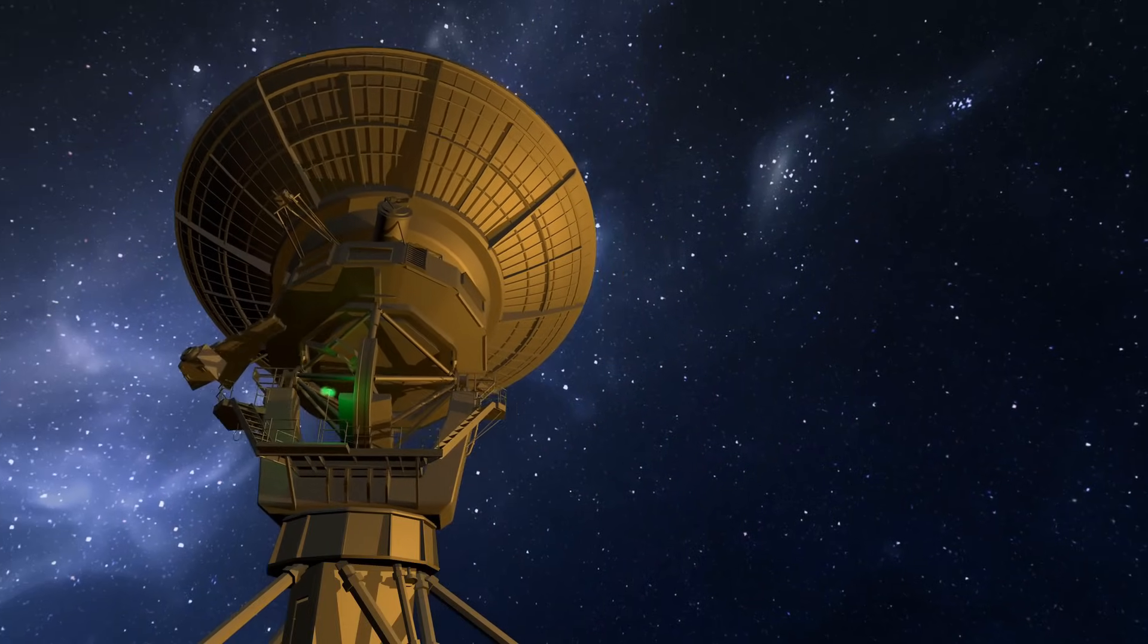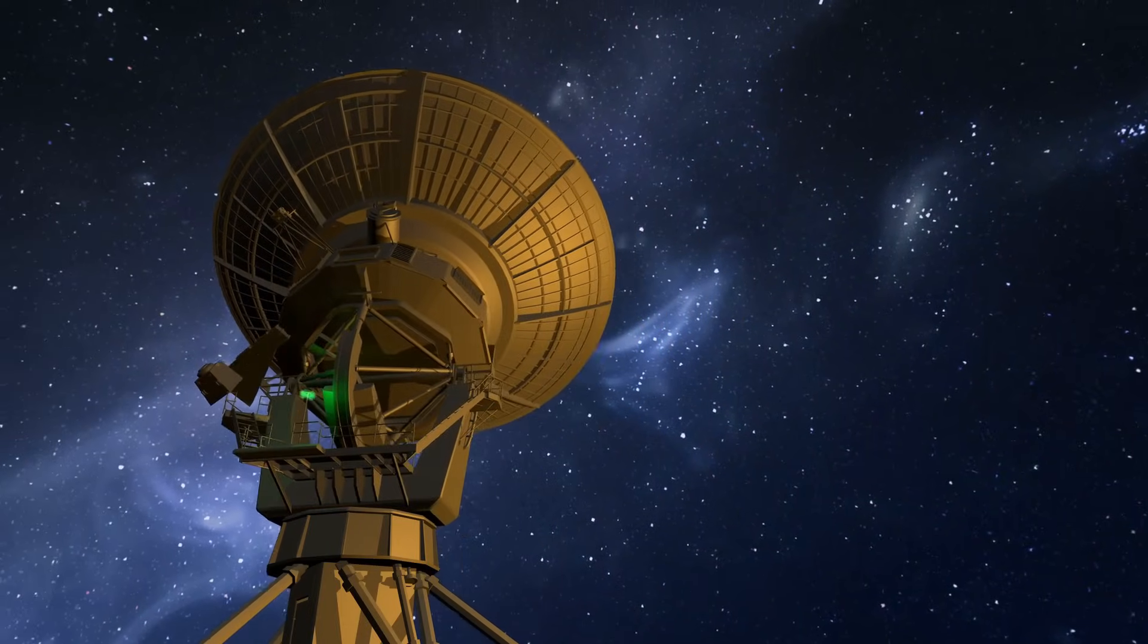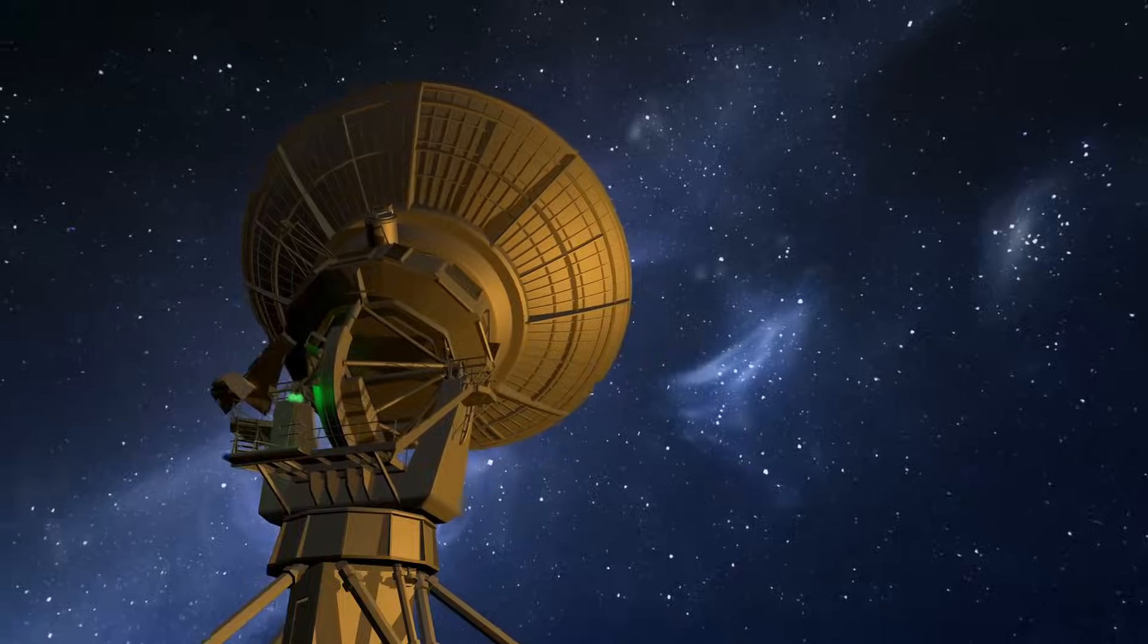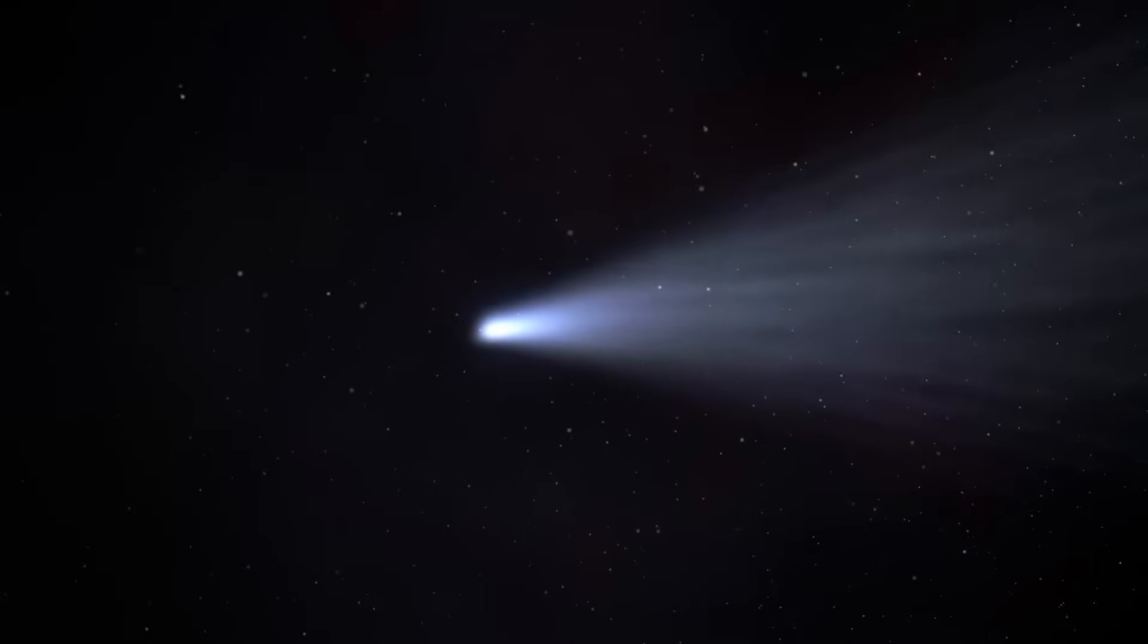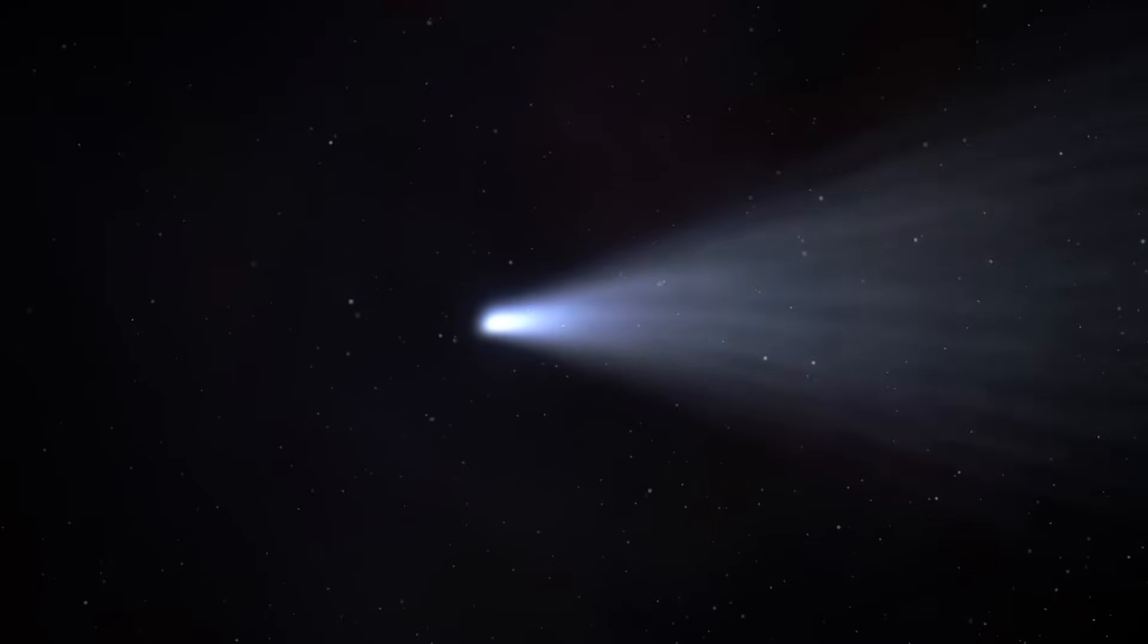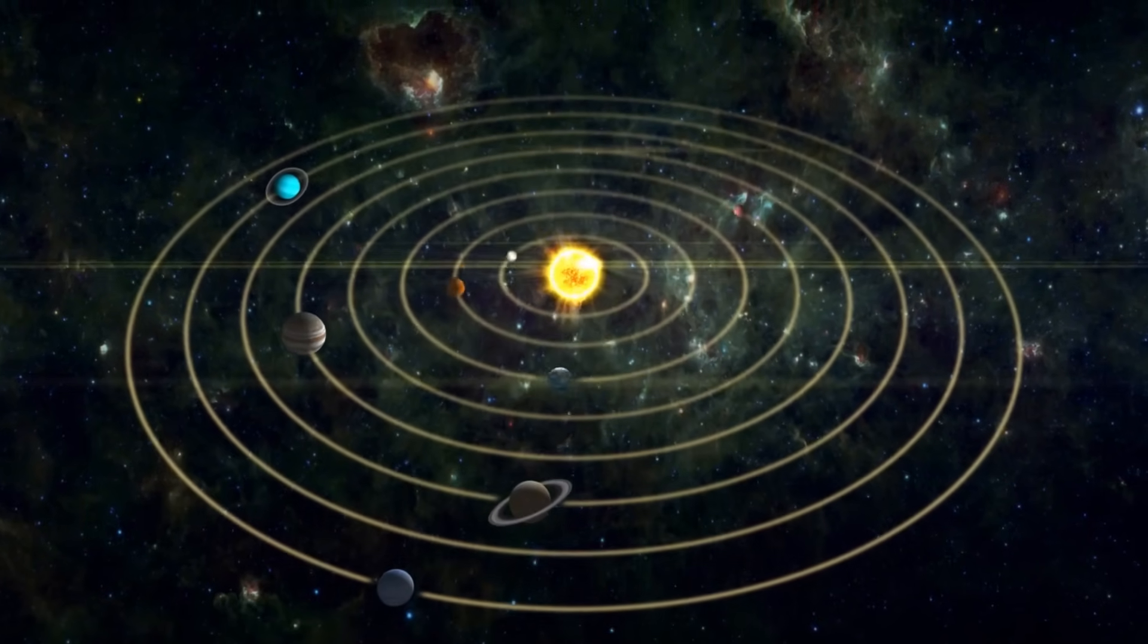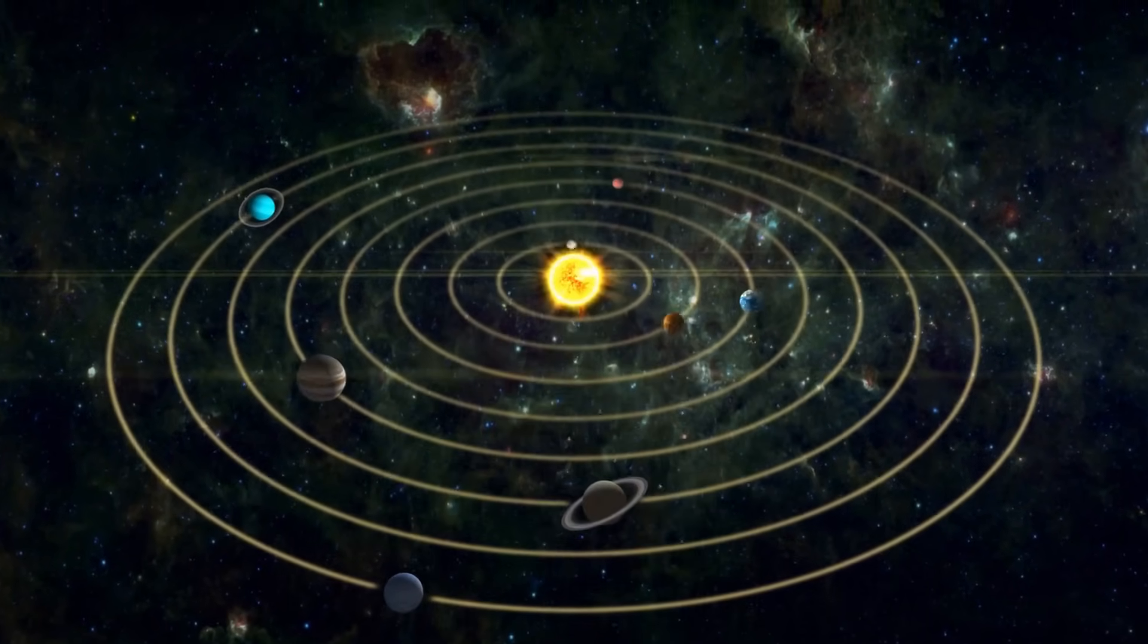The images themselves are haunting. In some, 3i Atlas appears as a bright emerald core, glowing against the blackness, surrounded by a diffuse halo of dust and gas. The green is unmistakable, a sign of active chemistry and transformation.